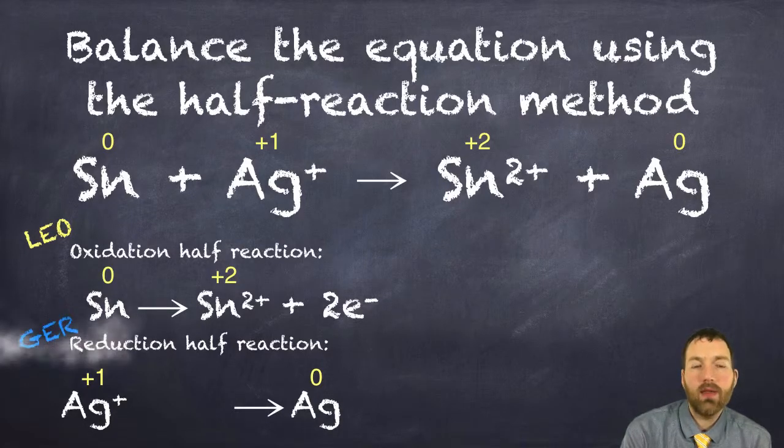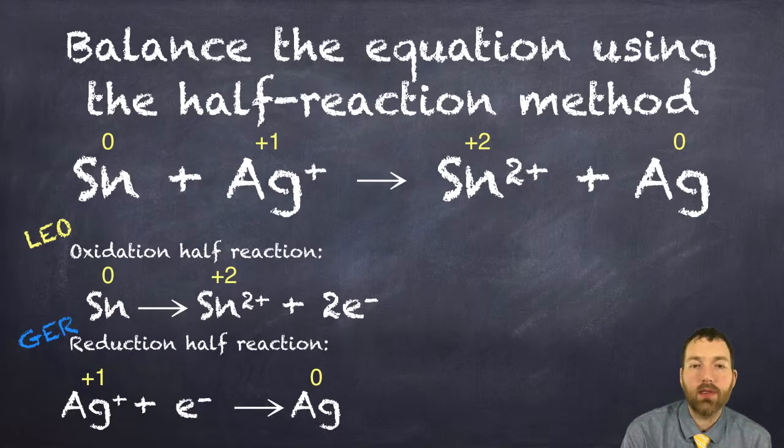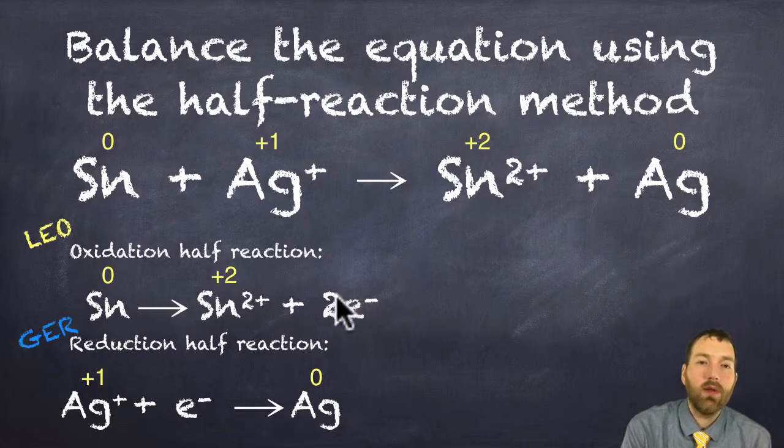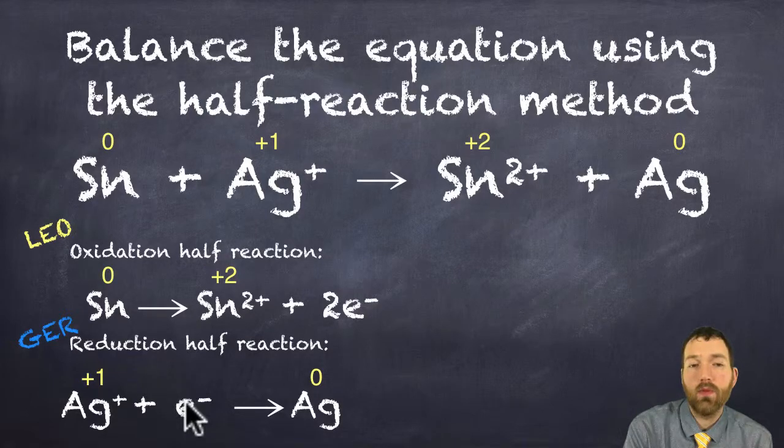It has to gain electrons to do this. A silver ion only needs to gain one electron to turn into a silver atom. Notice that the amount of electrons lost in oxidation, two, does not equal the amount of electrons gained in reduction, one.